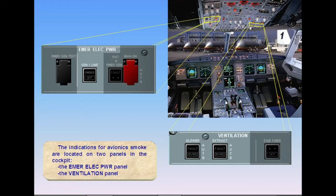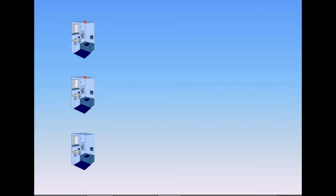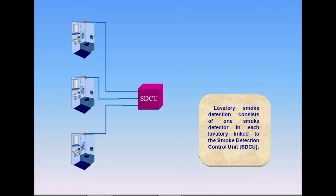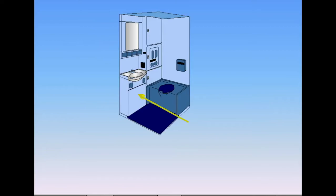Lavatory smoke detection consists of one smoke detector in each lavatory linked to the smoke detection control unit, SDCU. In addition, each lavatory waste bin has an automatic fire extinguishing system.